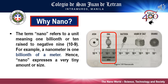A human hair is approximately 80,000 to 100,000 nanometers wide. A single gold atom is about a third of a nanometer in diameter. On a comparative scale, if the diameter of a marble was 1 nanometer, then the diameter of the earth would be about 1 meter. And lastly, 1 nanometer is about as long as your fingernail grows in one second.